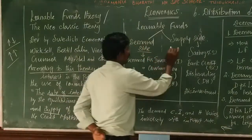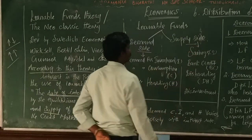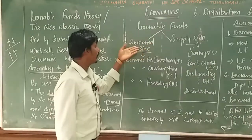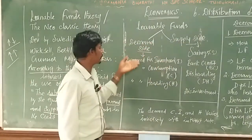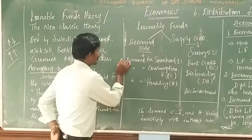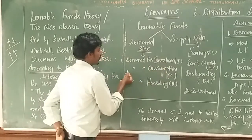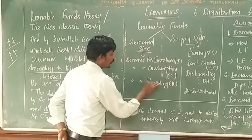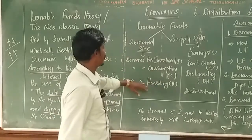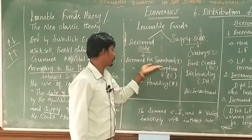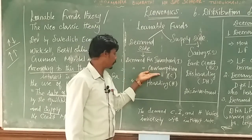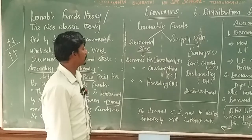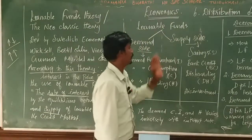Loanable funds are classified into the demand side and the supply side. On the demand side, there are three categories: the first one is demand for investment, the second one is demand for consumption, and the third one is demand for hoarding.